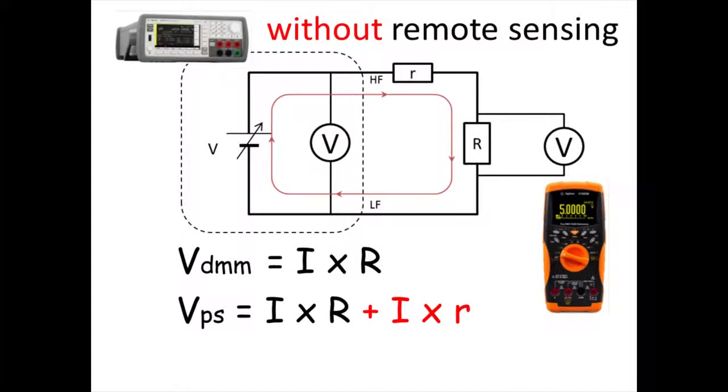In case you don't use remote sensing, the monitoring voltage of the power supply contains the applied voltage of the lead resistance. Therefore, the power supply cannot know the actual voltage applied to the DUT.